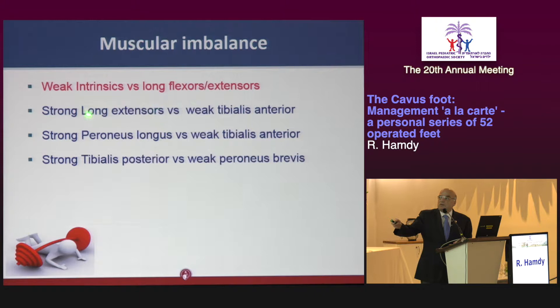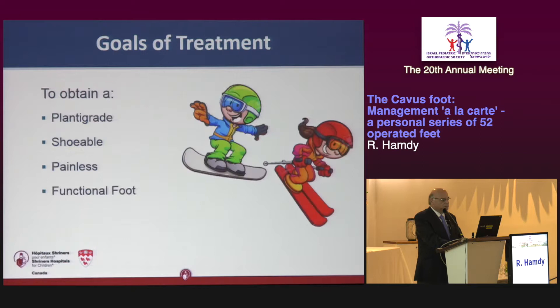For the weak intrinsics you can do the Jones transfer — you tenotomize the long extensor to the brevis. For the relatively strong tibialis posterior versus peroneus brevis, you have to do a complete tibialis posterior transfer through the interosseous membrane to the lateral border of the foot. Whatever surgical choice you make, the goals are to obtain a plantigrade foot that you can put inside a shoe — even if the child is not walking, they still have to wear shoes — a painless and functional foot.